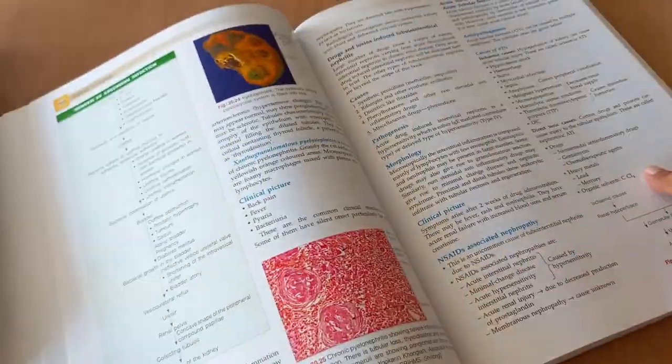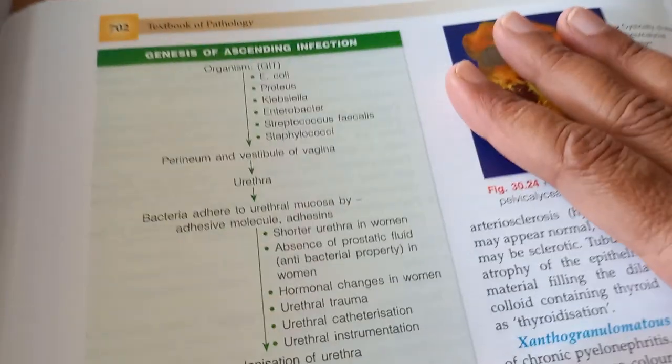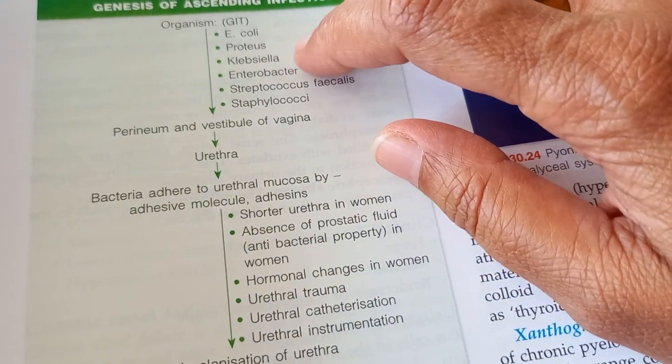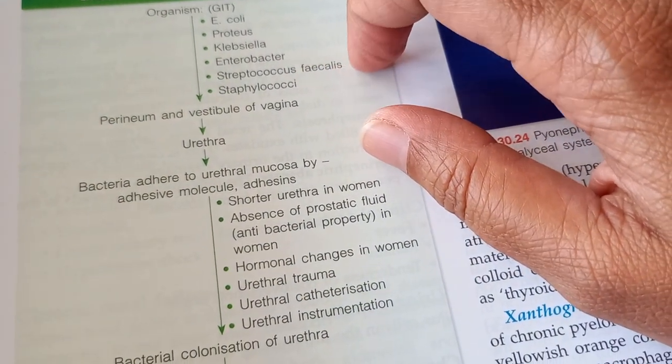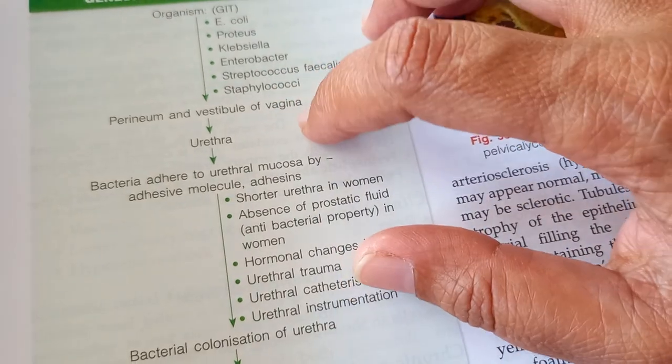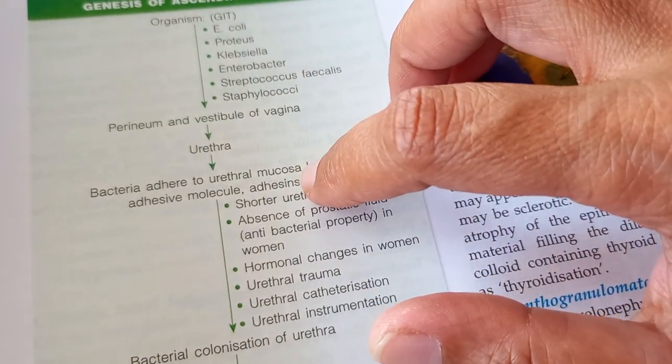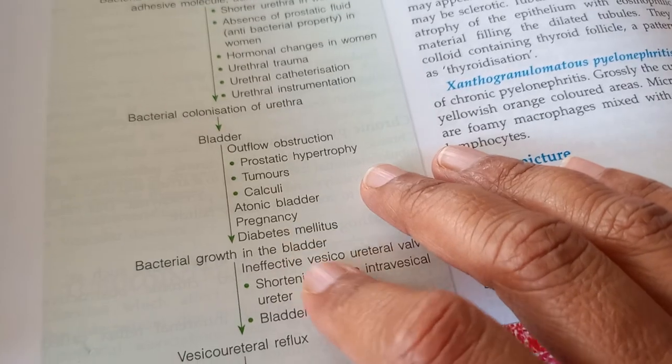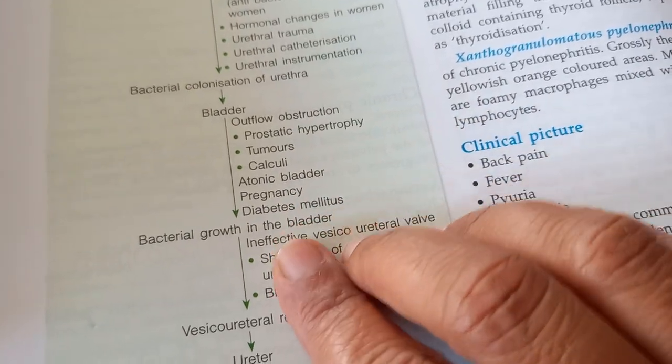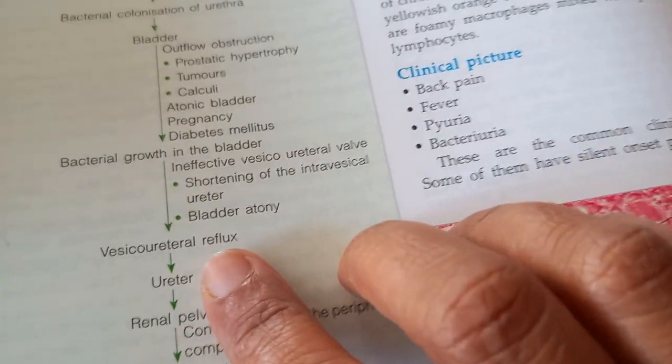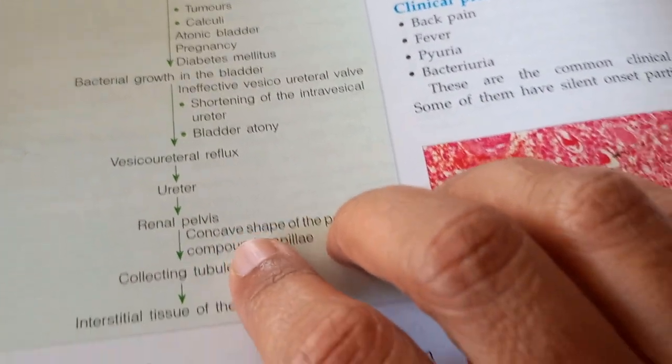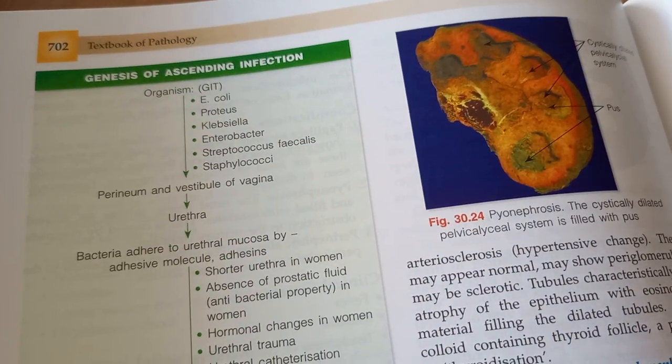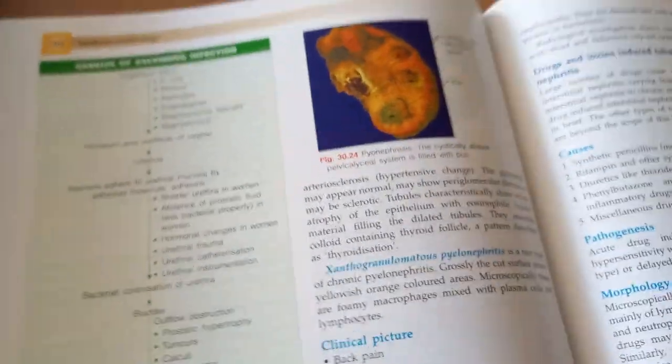Hopefully you have learned something at least by looking at the review of this book. Let's look at this one last thing. Genesis of ascending infection organism in the GIT. There is some E. coli, Proteus, Klebsiella, Enterobacter, Streptococcus faecalis. It will go to the vagina, the urethra. Bacteria will adhere to the urethral mucosa. Colonization. Then it will go to bladder. Bladder obstruction. Bacterial growth in the bladder. Then the vesicoureteric reflux, ureter, renal pelvis collecting to the interstitial tissue of the kidney. Genesis of ascending infection of which organ? Come on, tell that in the heading properly.